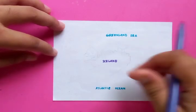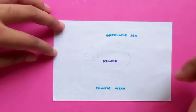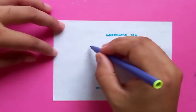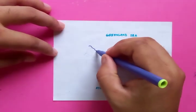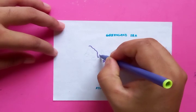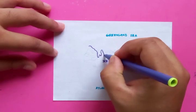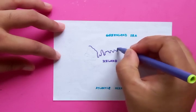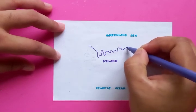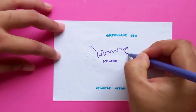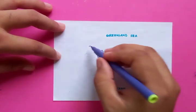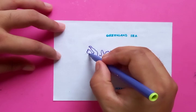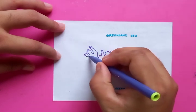Let's start. First we are going to draw the outlines of the borders. This island has the sea or the ocean all around it — it's like a piece of land floating in the ocean. So first we're going to draw the outline, then we're going to put the colors.